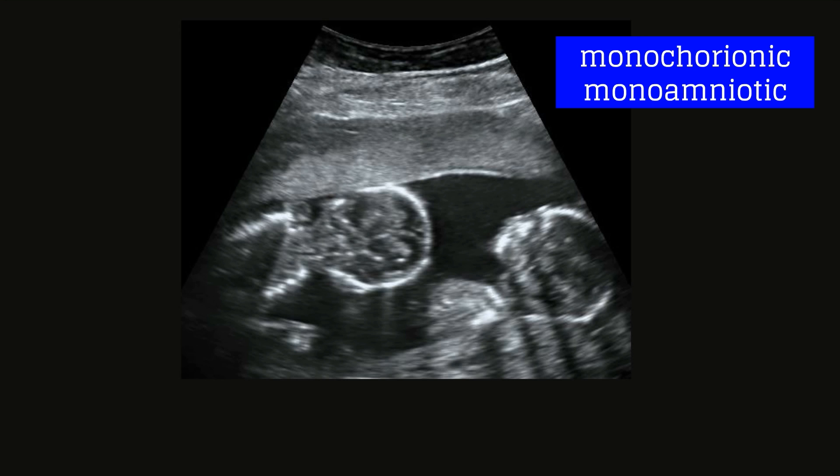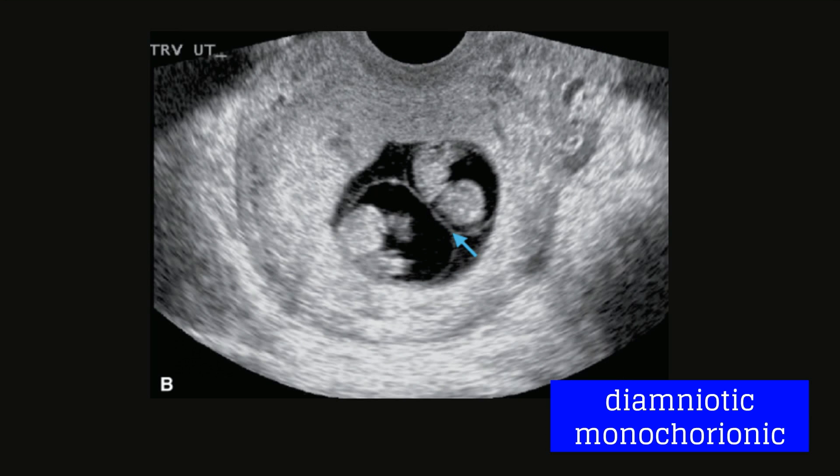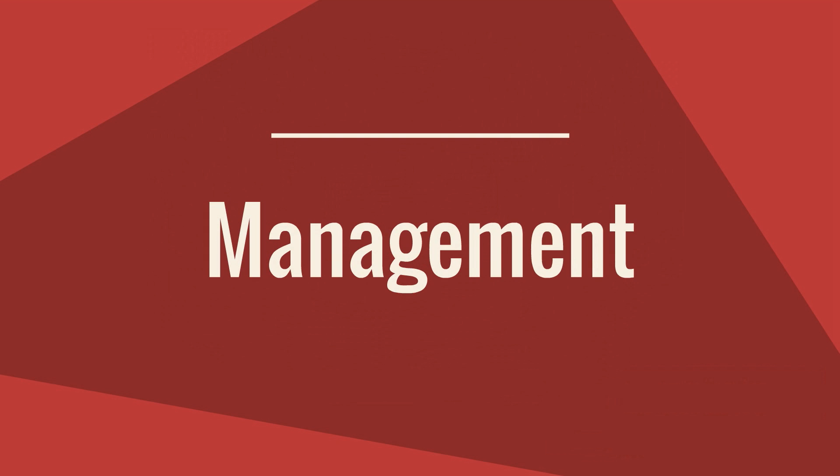Note that there is no membrane between the fetuses. In contrast, this ultrasound demonstrates diamniotic monochorionic twins with the blue arrow pointing to the amnion that separates the fetuses. Once the diagnosis of twins has been made, then unique care must be given to address the potential concerns of multifetal gestation, so let's move on to management.